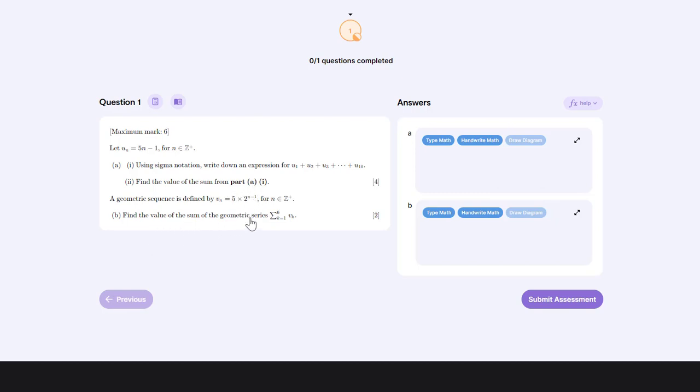We're asked to find the value of the sum of the geometric series, summation from k equals 1 to 6 of v of k. So we're finding the sum of the first six terms of a geometric series.